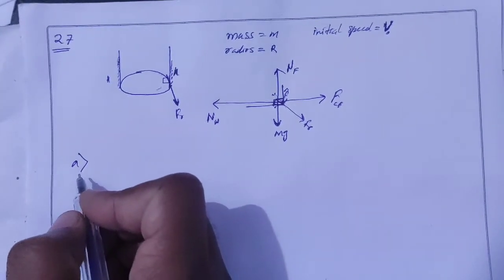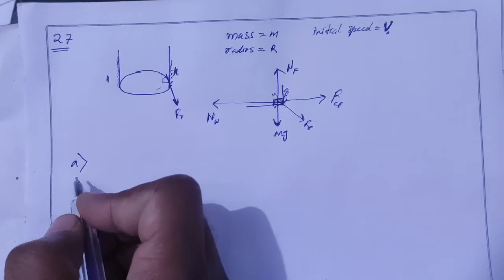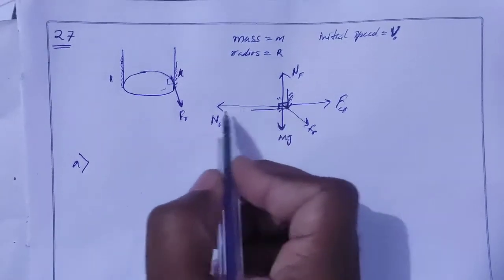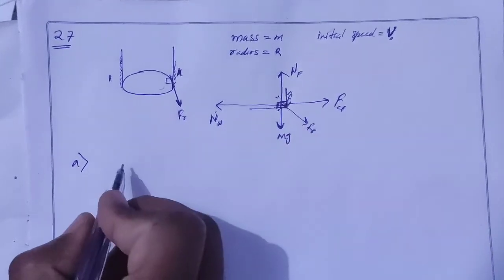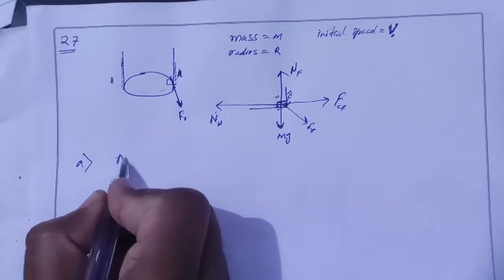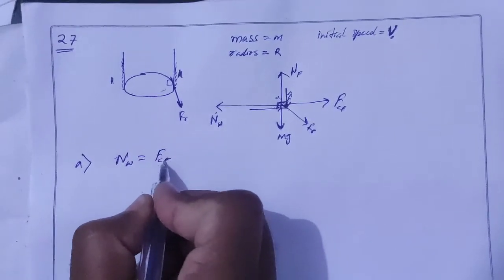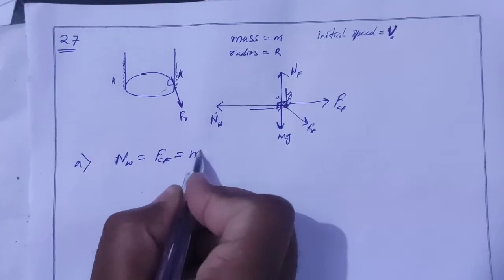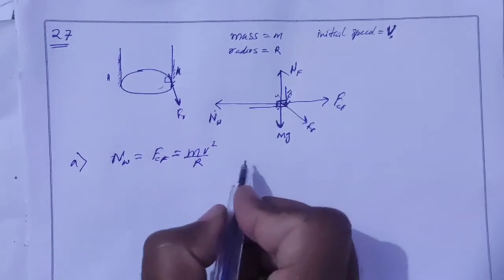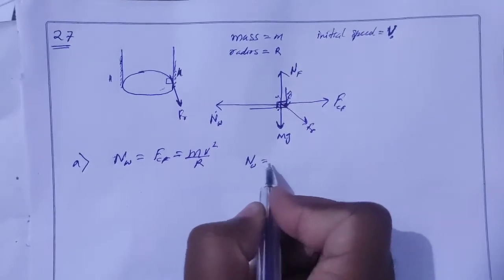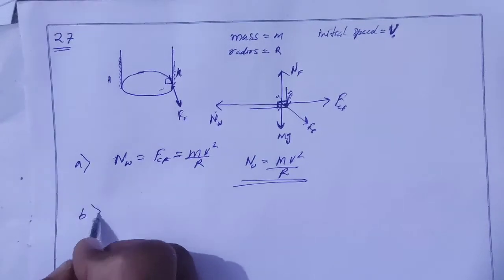First question: the normal force by the wall on the block. The wall provides a normal force. Due to centrifugal force, the normal force N is equal to mv²/r. So the first answer is N = mv²/r.